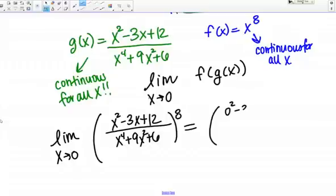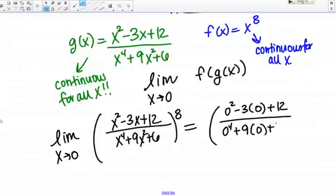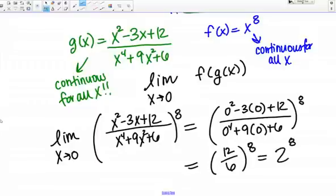0 squared minus 3 times 0 plus 12 over 0 to the 4th plus 9 times 0 plus 6, all raised to the 8th power. So I get 12 over 6 to the 8th power, or 2 to the 8th power.